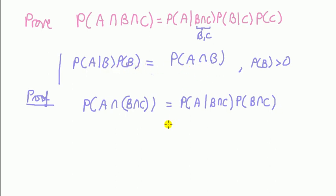But you can see that this equals that follows immediately by applying Bayes again. In other words, applying Bayes again to this gives probability of B given C times probability of C. And that's the proof.